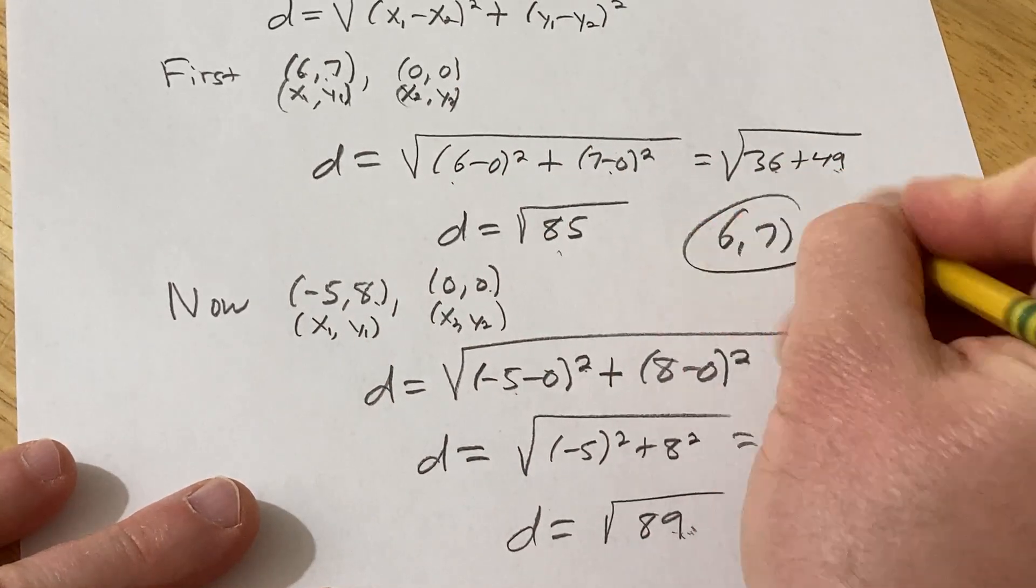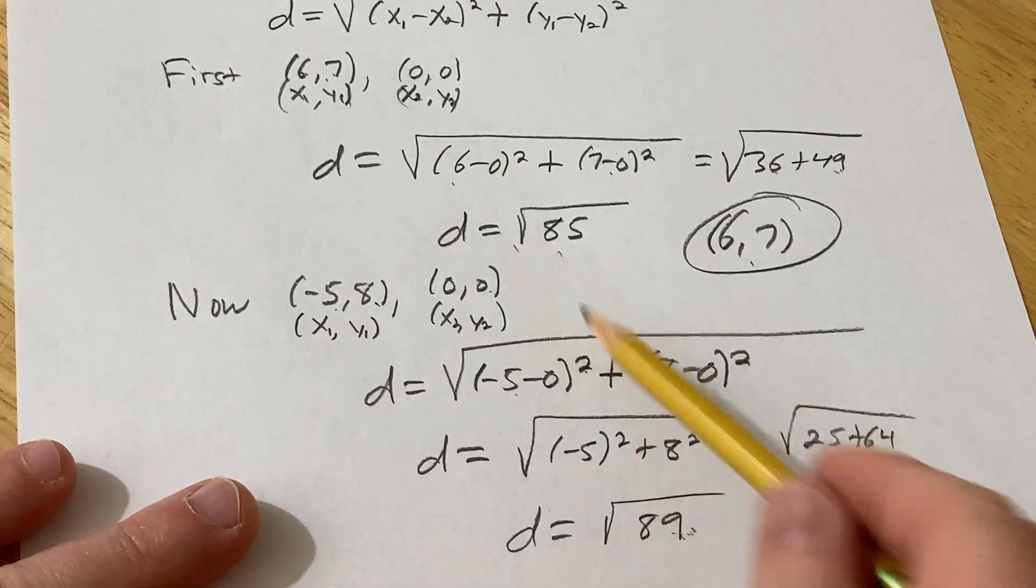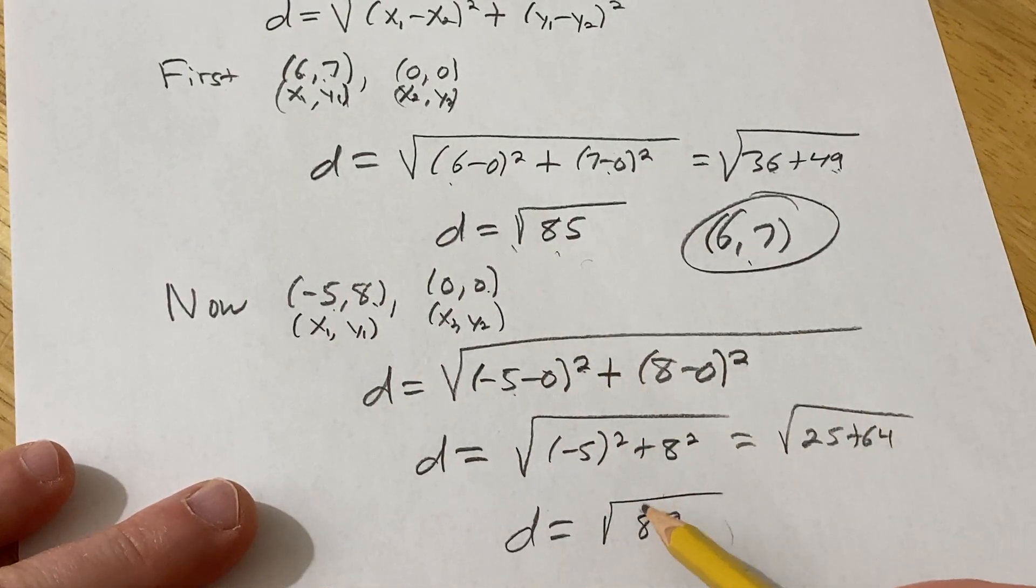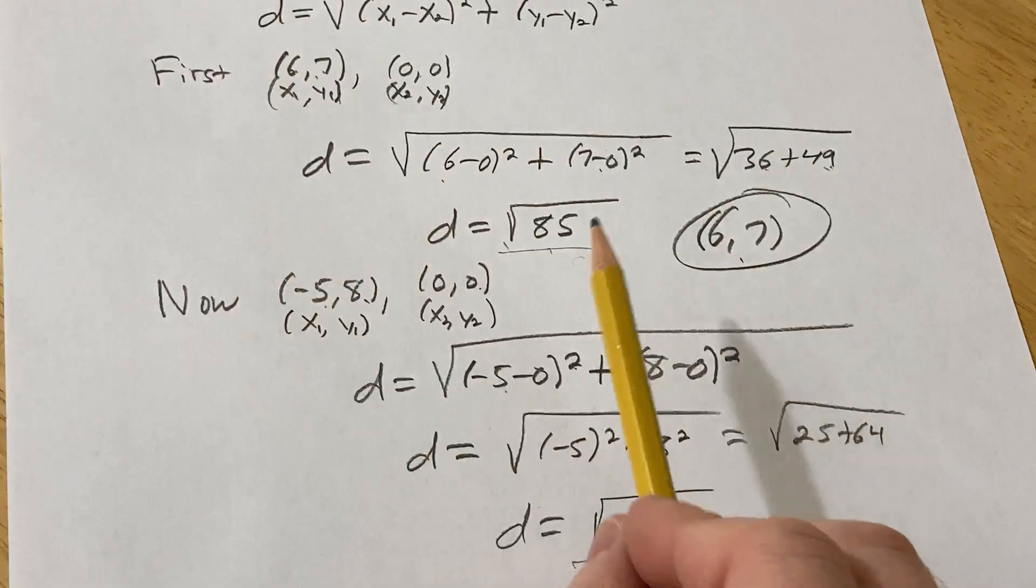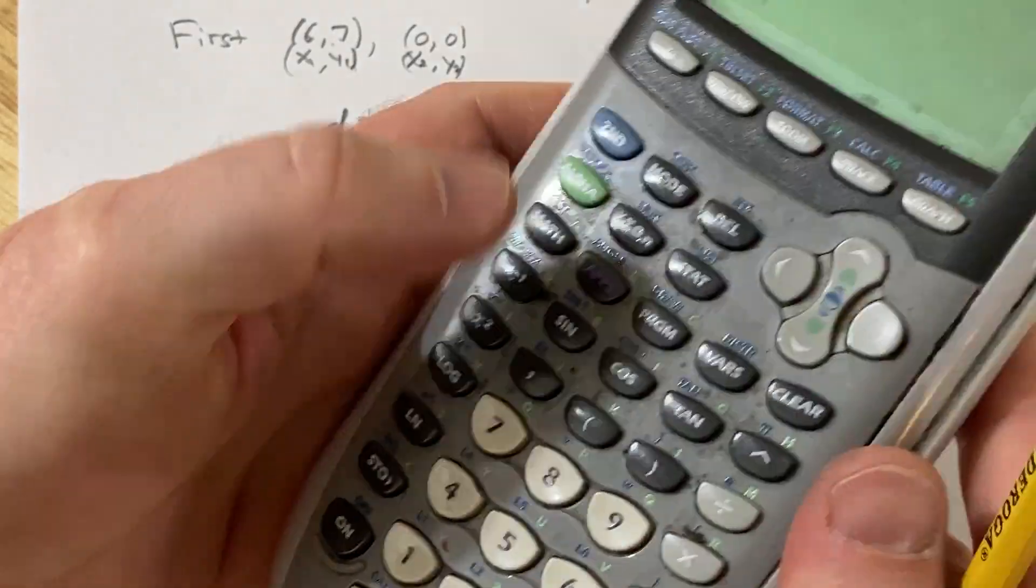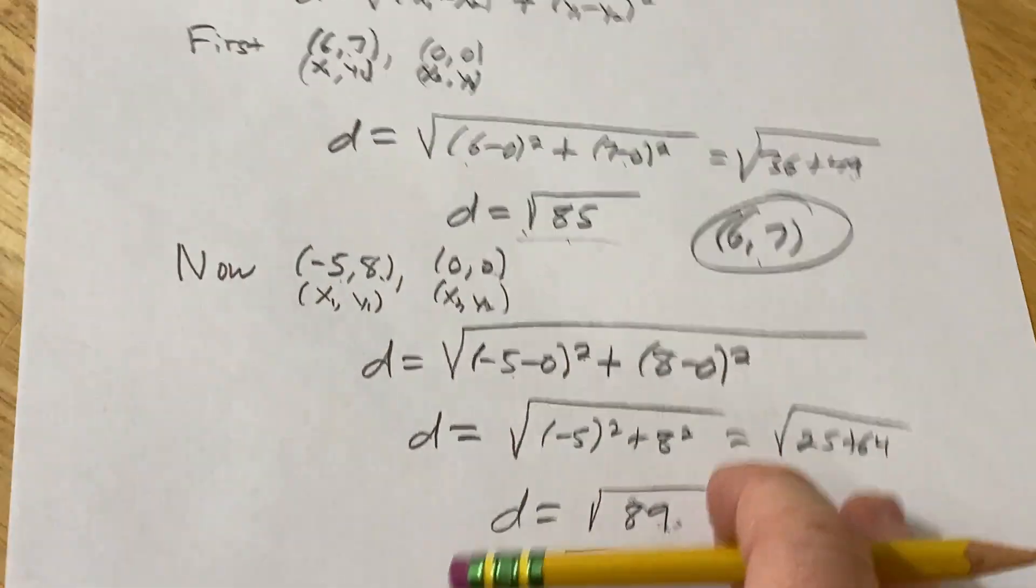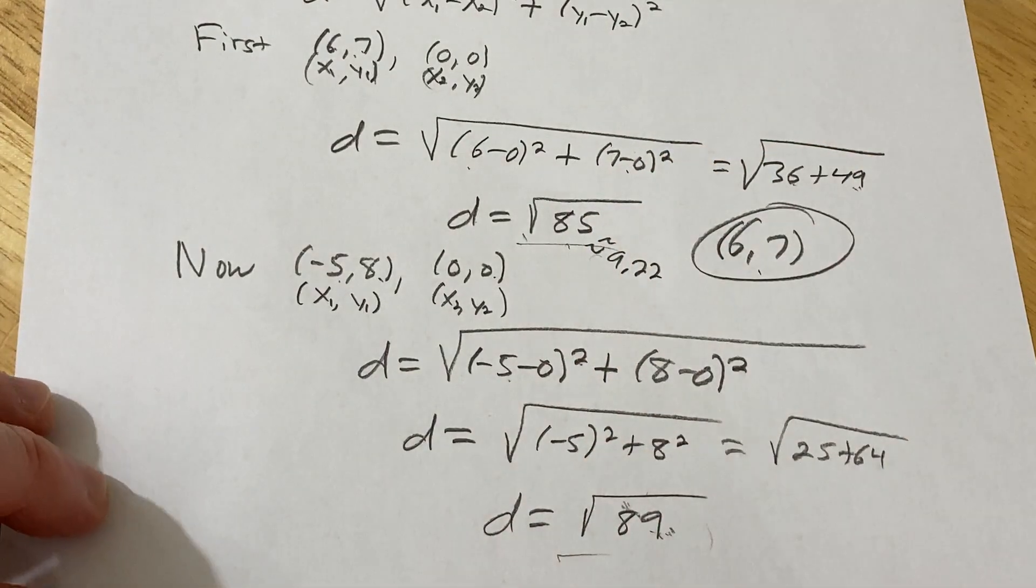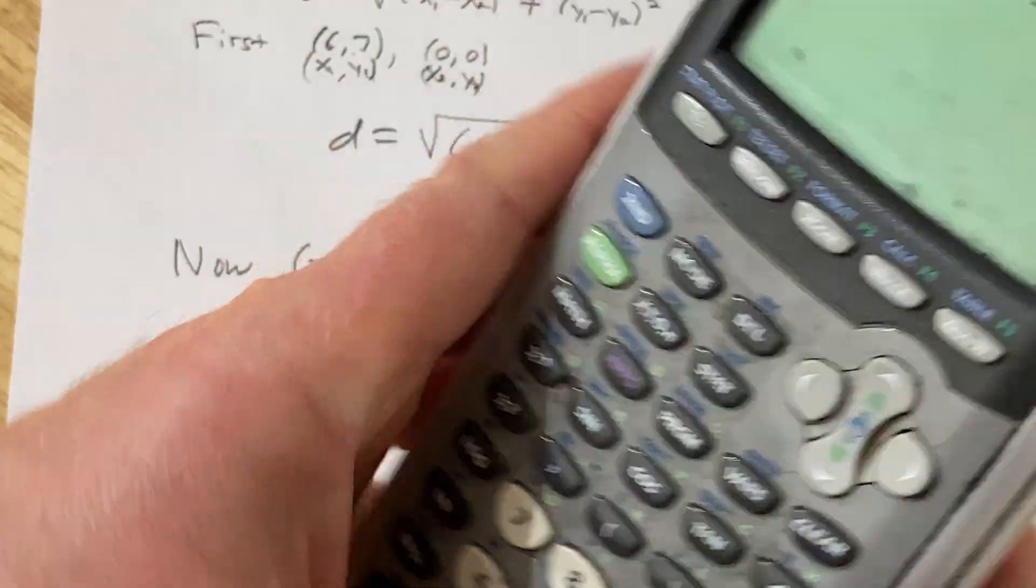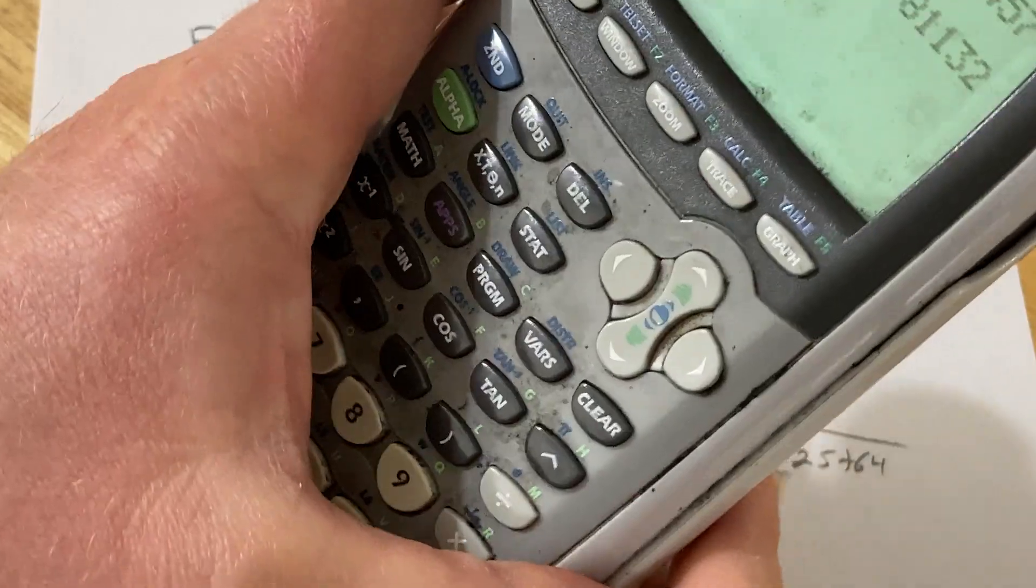The answer is, this point is closer to the origin than this one. So pretty close to each other, or rather, pretty close in distance to the origin. These numbers are pretty close. I'm curious to see what these decimals are, I'm going to actually type it into my calculator. The square root of 85 is 9.22, okay, so this is 9.22 units away, roughly, from the origin. And the square root of 89 is 9.43.